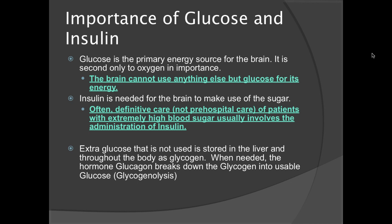Insulin is needed for the brain to make use of the sugar. Often, definitive care — not pre-hospital care — of patients with extremely high blood sugar usually involves the administration of insulin. However, insulin is not used in the pre-hospital setting.